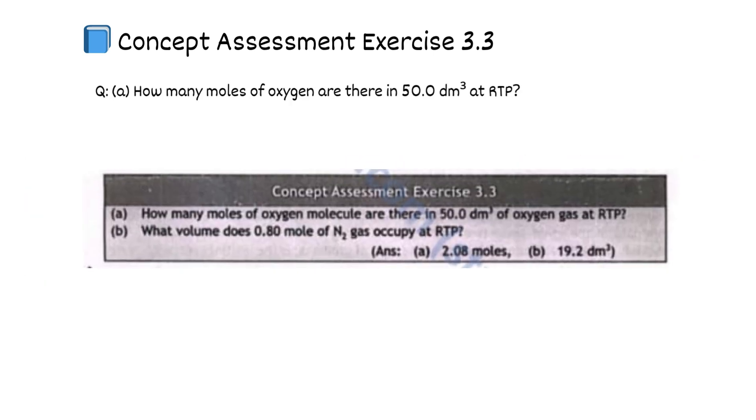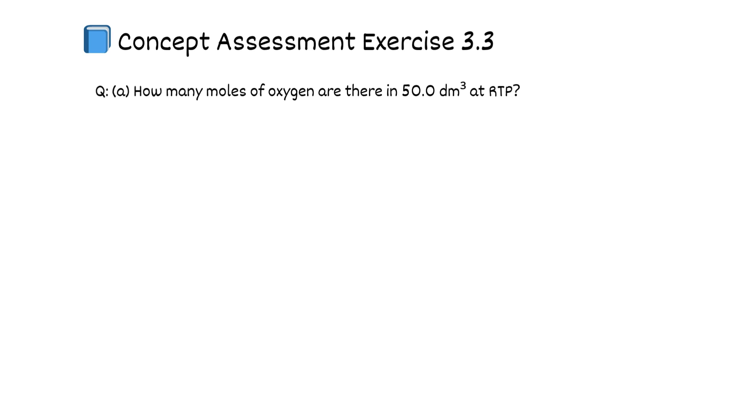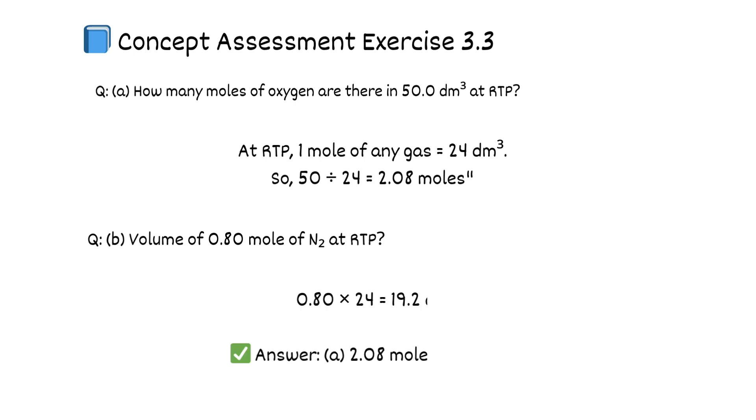Concept Assessment Exercise 3.3. Question A: How many moles of oxygen are there in 50.0 dm³ at RTP? At RTP, 1 mole of any gas equals 24 dm³. So 50 divided by 24 equals 2.08 moles. Question B: Volume of 8.0 mole of N2 at RTP. 8.0 times 24 equals 192 dm³.